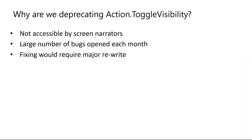Why are we deprecating Action.ToggleVisibility? The main reason is that it's not accessible by screen narrators. The way the control is implemented, the screen narrator does not detect that the text has changed or that there's more content on the screen. Due to this, we have a large number of accessibility bugs opened related to Action.ToggleVisibility. Fixing this with the current implementation would require a major rewrite of the action.